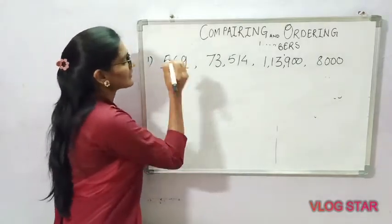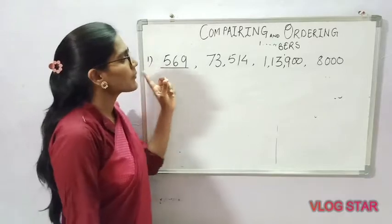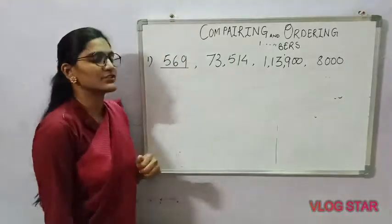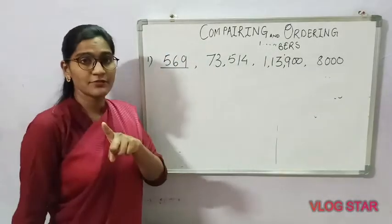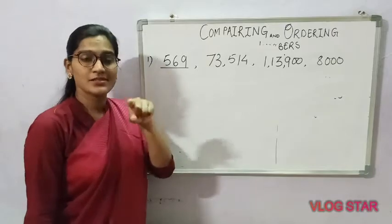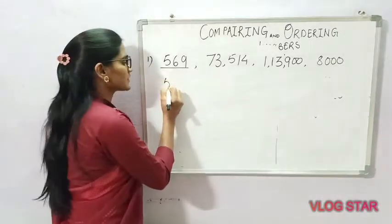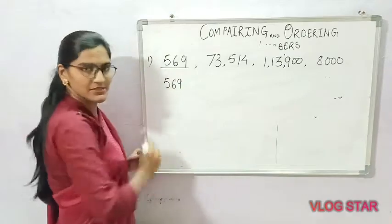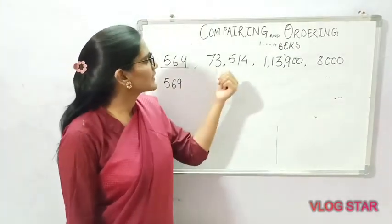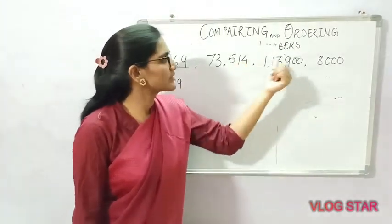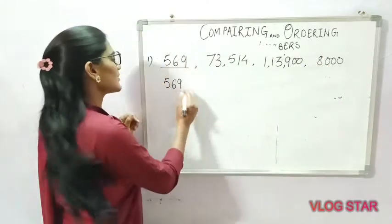First of all, 569 is a three-digit number, so it is the smallest. We write the smallest number first in ascending form — that is 569. Now we look for a four-digit number. Yes, there is one — that is 8,000.